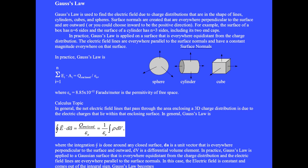Gauss's law is used to find the electric field due to charge distributions that are in the shape of lines, cylinders, cubes, and spheres. Surface normals are created that are everywhere perpendicular to the surface and outward. We choose outward to be the positive direction of the constructed surface normals.